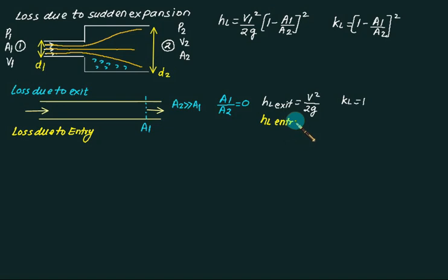Is this value be same as HL for entry also? HL for entry when the model is that this tank is very very large, then value of A2 will be very very large. V1 you have to select as a smaller finite dimension. Is this value be same as V square. For this also loss coefficient equal to 1.